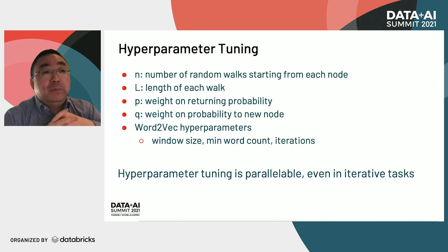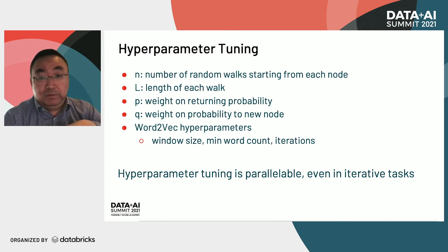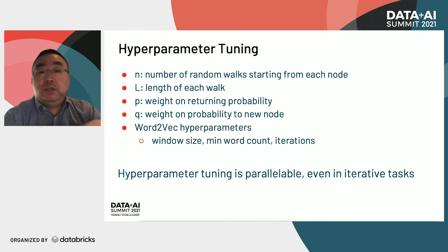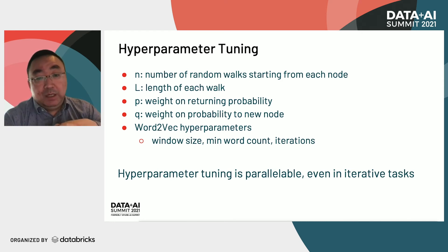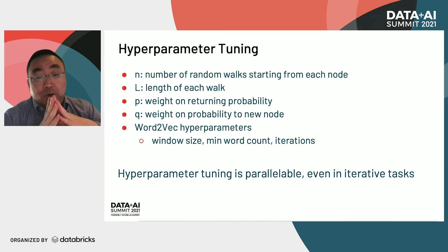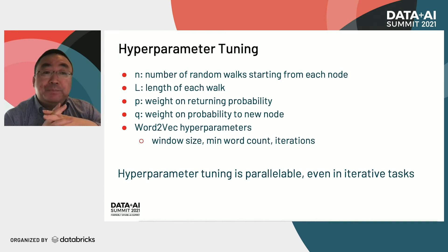We also have some hyperparameters for node2vec to tune. There is the number of random walks from each vertex, length of random walk, and some probability to return to the original node or move to a new node when hopping — this probability controls search behaviors like breadth-first search or depth-first search. We also have a few hyperparameters from the word2vec step, like sliding window size, minimum word count threshold, and number of iterations. Optimizing all these hyperparameters requires huge computing workload. Fortunately, hyperparameter tuning is parallelizable, even for iterative tasks.